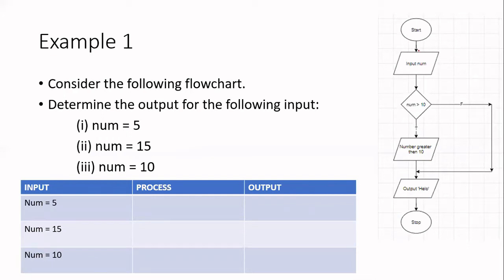We're given a flowchart, and we want to try and understand what it is doing for different sets of input values. We will then use an IPO table to see what the output would be. From start to input it's sequential, but then it's no longer sequential — I'm making decisions. Here's my condition, and if the condition is false I go in one direction, and when it's true I go in a different direction. This is no longer sequential, where every statement executes one after the other.